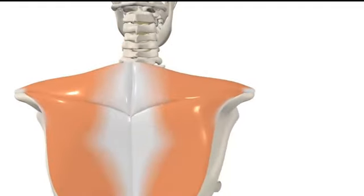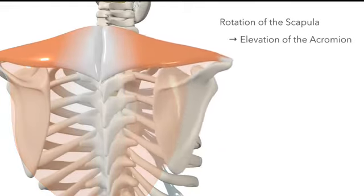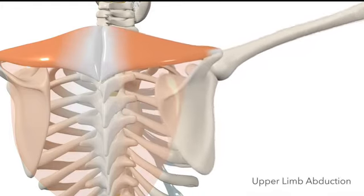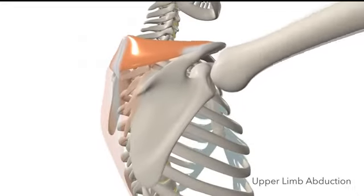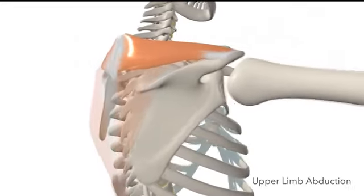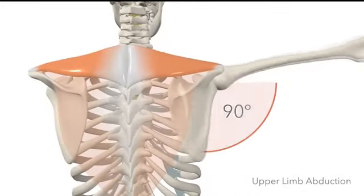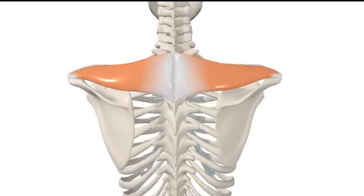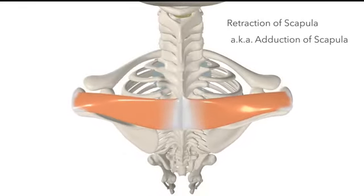The middle and lower fibres of the trapezius rotate the scapula, causing elevation of the acromion. This assists in abduction of the upper limb, allowing the upper limb to abduct beyond 90 degrees, until which point the scapula is fixed. The middle fibres also perform retraction of the scapula, also known as adduction of the scapula.